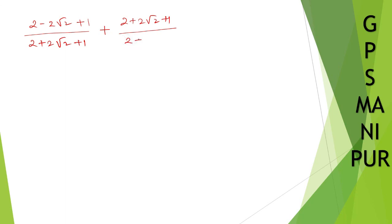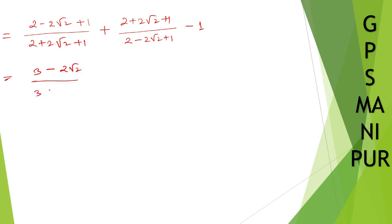Grouping the constants: 2 plus 1 equals 3. So we have (3 minus 2√2) divided by (3 plus 2√2), plus (3 plus 2√2) divided by (3 minus 2√2), minus 1.